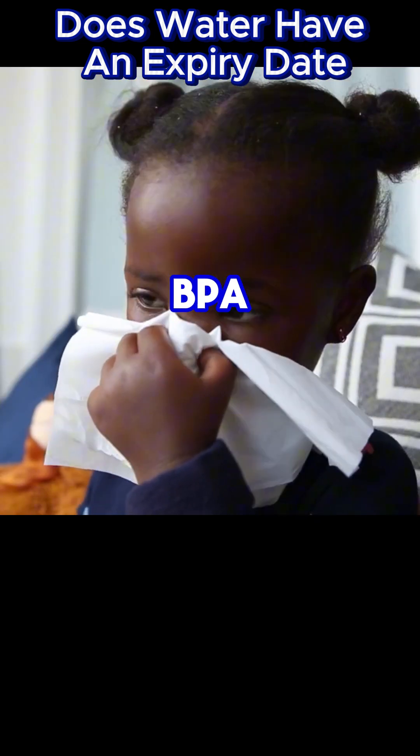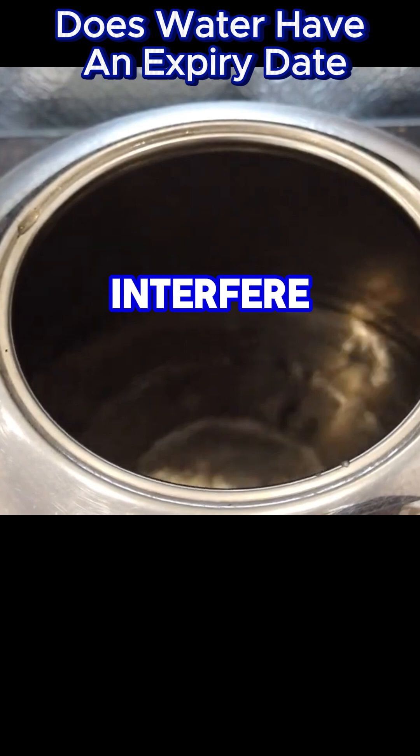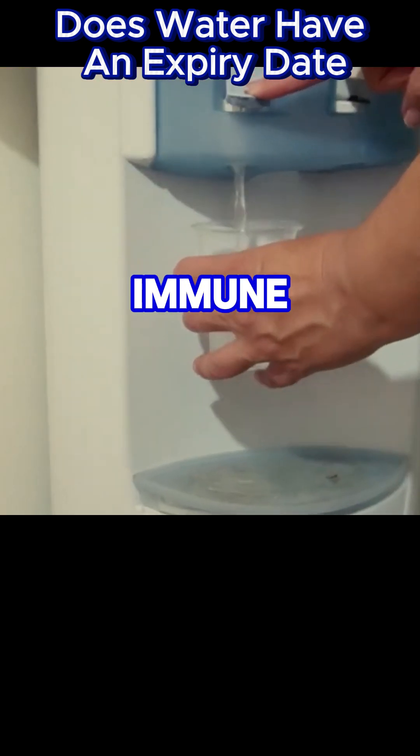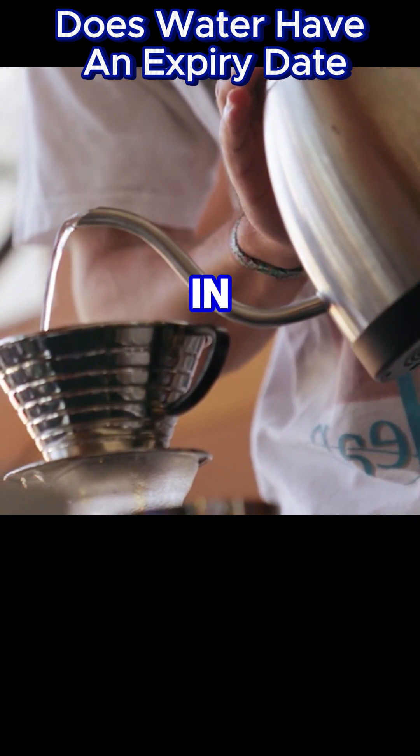Exposure to BPA used in plastics can interfere with reproductive development in animals and has been linked to cardiovascular disease, immune problems, and diabetes in humans.